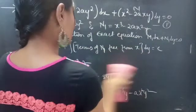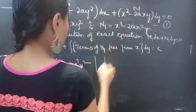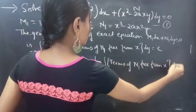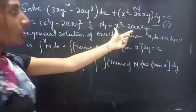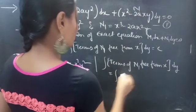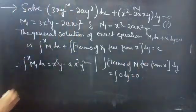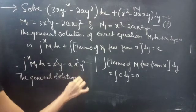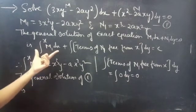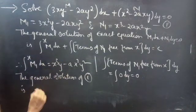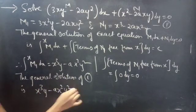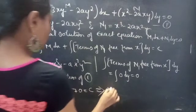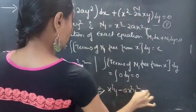For the second integral, this is N1. We don't have any term in N1 which is free from x. So the terms of N1 free from x is 0, giving the second integral as 0. Therefore the general solution of equation 1 is x³y minus ax²y² plus 0 equals c, which gives x³y minus ax²y² equals c.